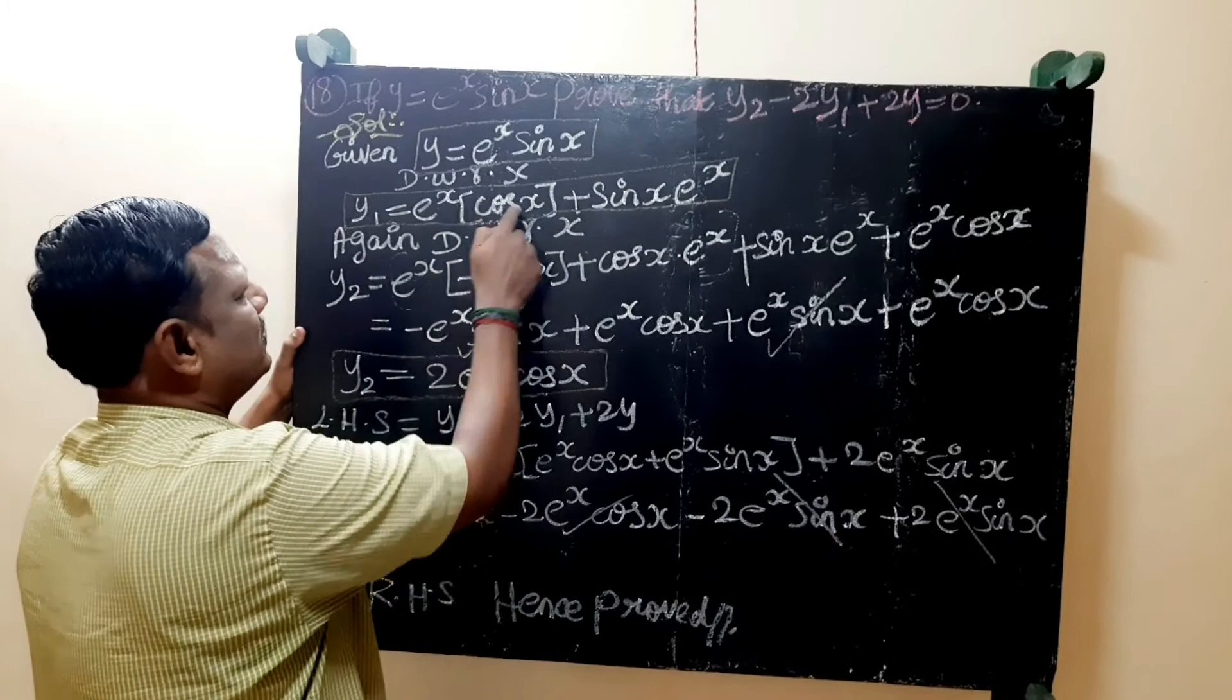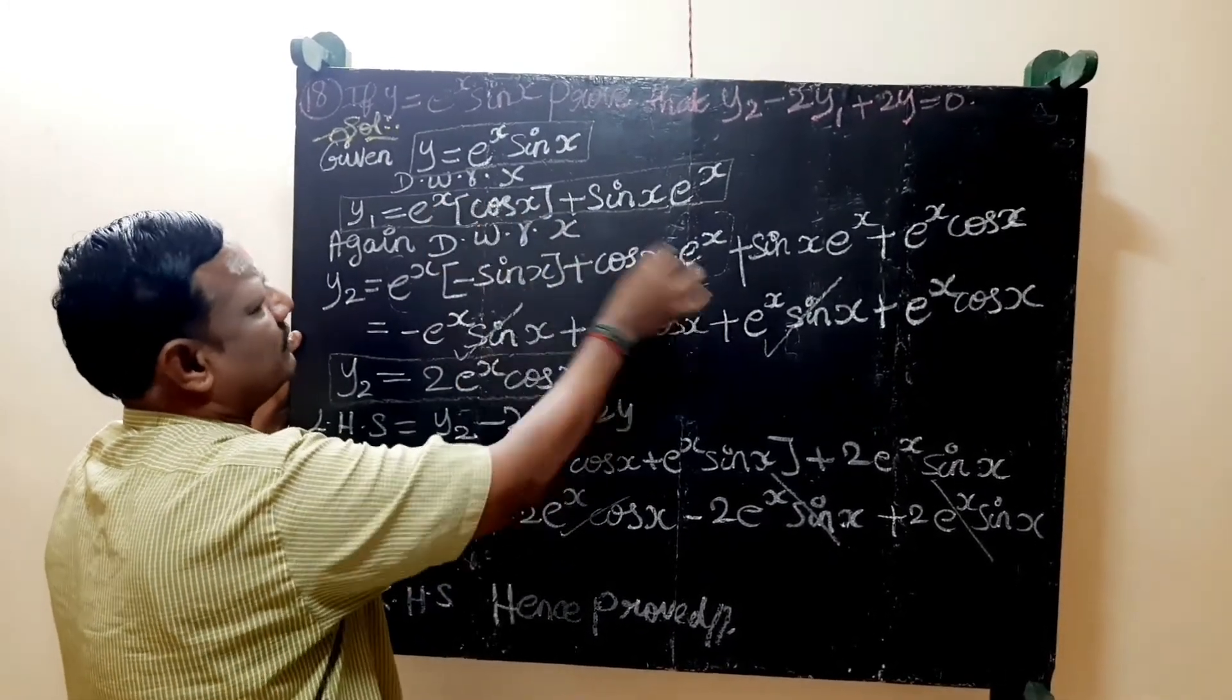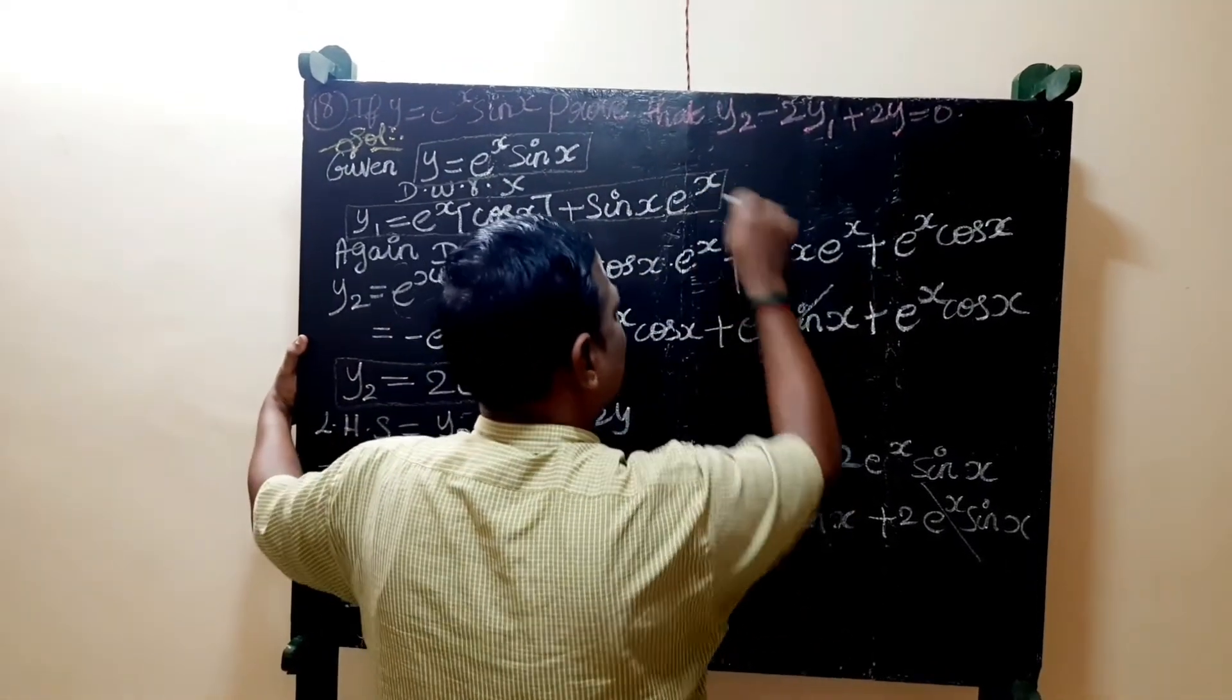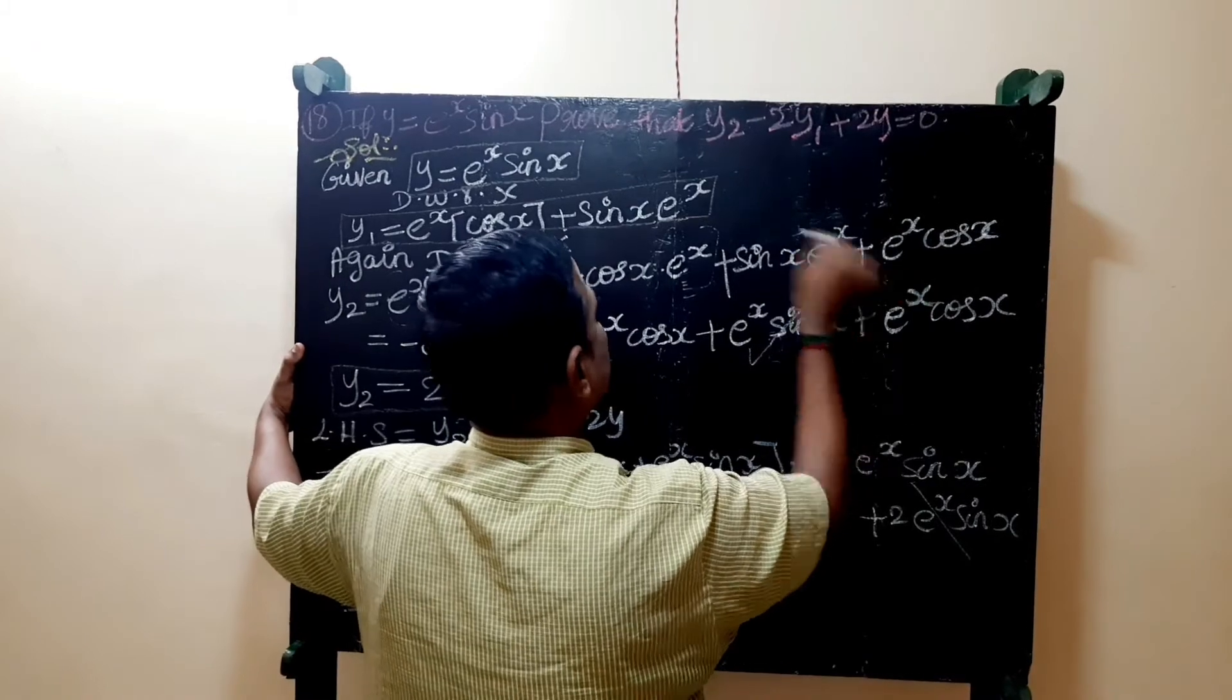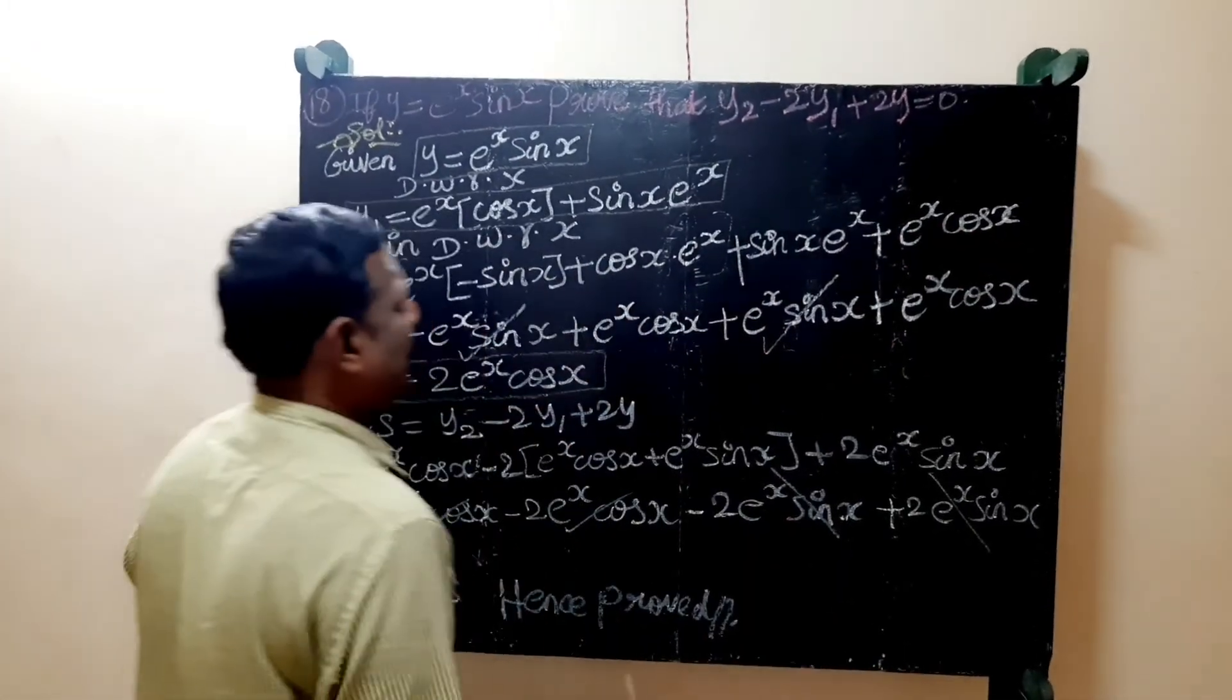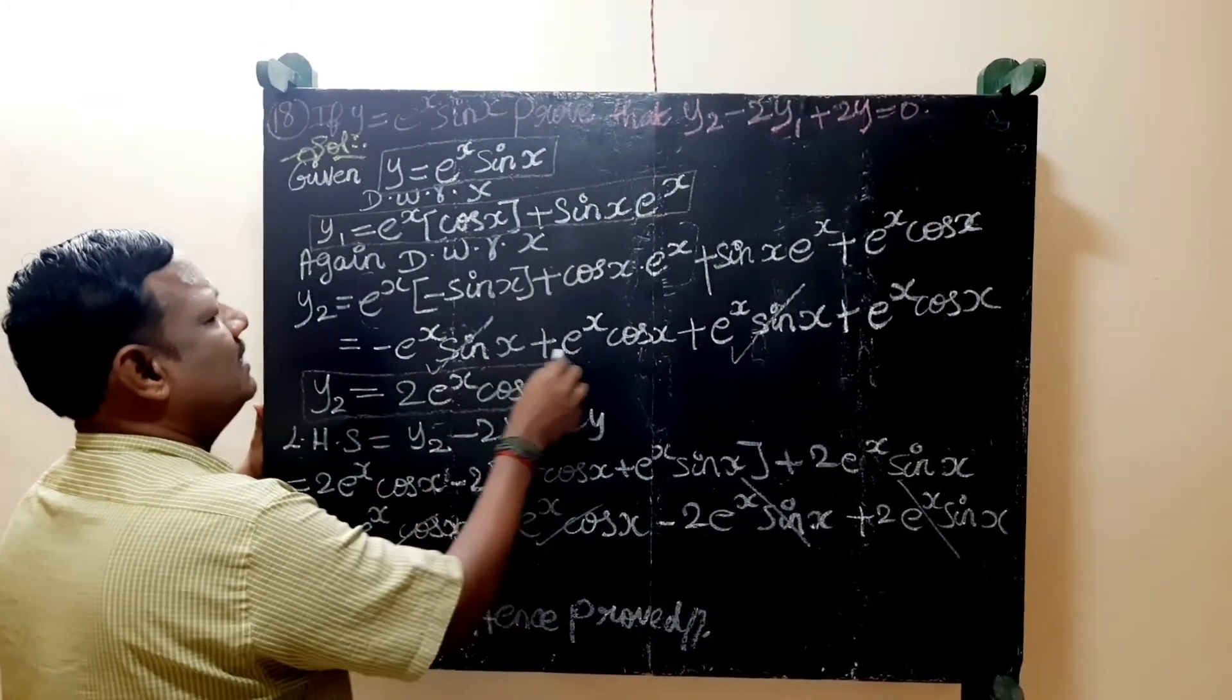So first thing we have to do: e power x is equal to cos x plus cos x is equal to e power x. Again u into v plus sin x is equal to e power x plus e power x is equal to sin x is equal to cos x.